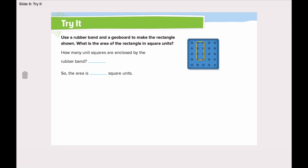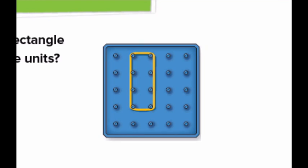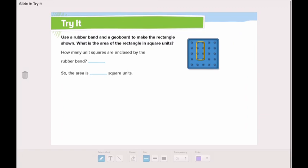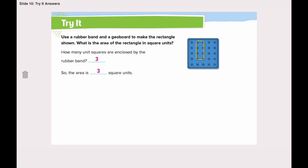We can also think of area as the amount of space enclosed by a figure. Here we used a rubber band on a Gboard to make the rectangle shown. What is the area of the rectangle in unit squares? How many unit squares are enclosed by the rubber band? One, two, three. So the area is three square units.